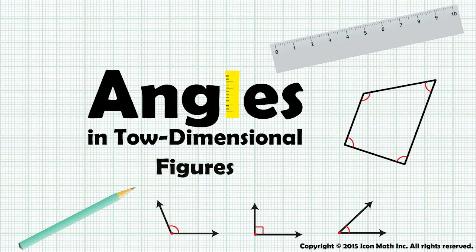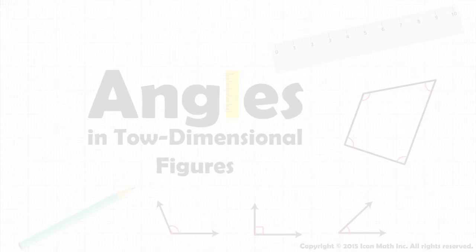Angles in Two-dimensional Figures. Remember that angles are formed by two rays sharing the same endpoint. But since line segments can be seen as part of rays, then angles can also be formed when two line segments share the same endpoint.